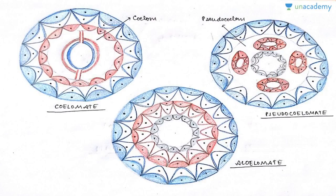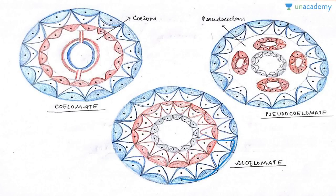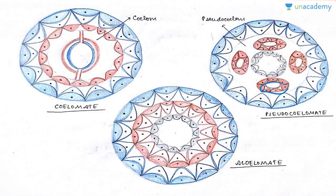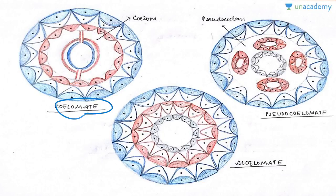This diagram shows the eucoelomate — we cannot see any gap between the body wall and the alimentary canal. In the pseudocoelom, we have pouches but they are not lined by mesoderm; they are basically the blastocoel, the embryonic cavity. In the eucoelomate, there is a mesodermal lining on both the internal and external parts — that's why they are true coelomates.